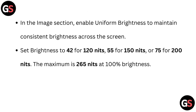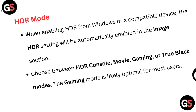In the Image section, enable Uniform Brightness to maintain consistent brightness across the screen. Set brightness to 42 for 120 nits, 55 for 150 nits, or 75 for 200 nits. The maximum is 265 nits at 100% brightness.